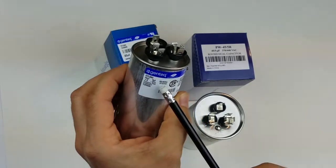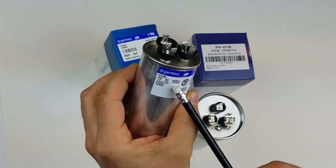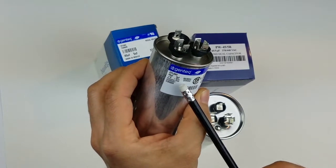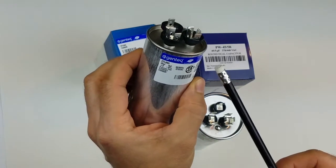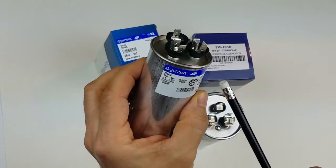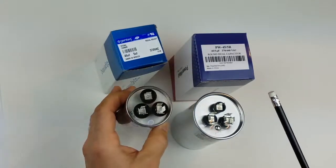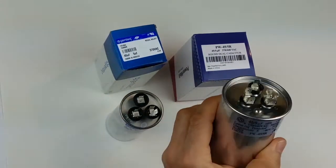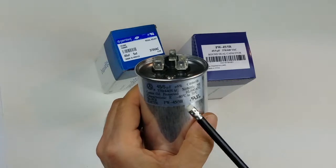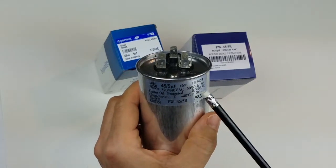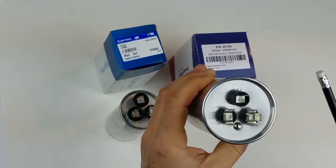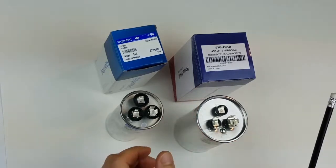The difference in voltage means they can be used in applications up to 370 volts. In the case of the Power Well capacitor, it can be used in 370 or 440 volt applications. What's the difference? Why?